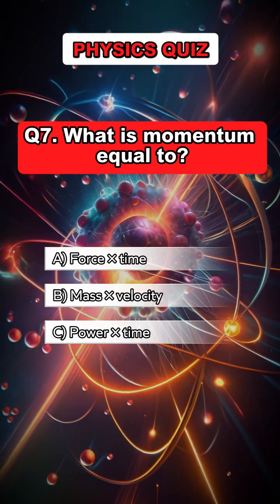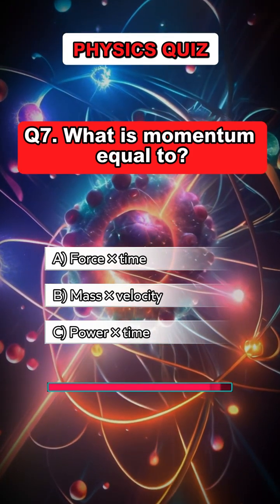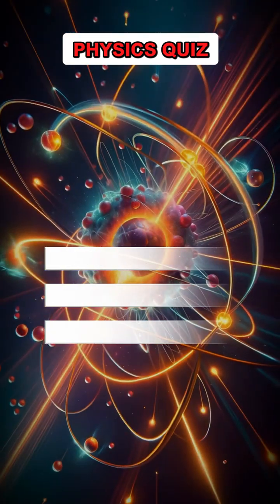Question 7. What is momentum equal to? Answer B: Mass times velocity.